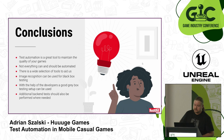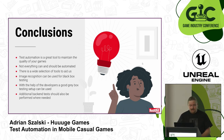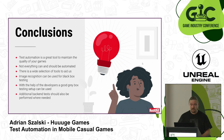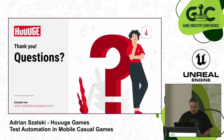So if there are just a few things that will stay in your head once you leave this room: test automation is a great tool to maintain the quality of your games. Not everything can and should be automated. There's a wide selection of tools to aid us. Image recognition can be used for black box testing, and with the help of the developers, a good grey box testing setup can be used. And of course, some additional backend tests should also be performed where needed.